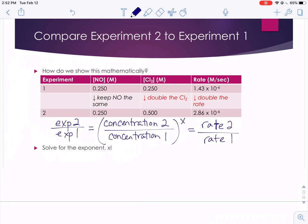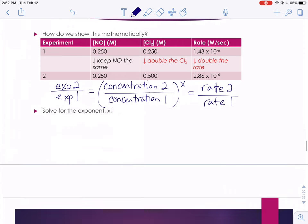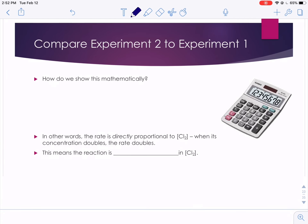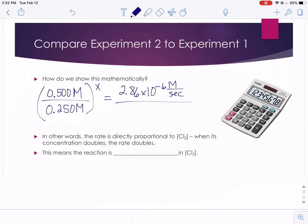Now it's just a matter of plugging in some numbers into that equation and solving for our order x. So when we start to plug this in mathematically, we said we were going to take the concentration of our chlorine in trial 2 and divide that by the concentration of our chlorine in trial 1, and raise that to our order with respect to chlorine that we're trying to solve for. We don't know. And then that's equal to the rate in experiment 2 over the rate in experiment 1.